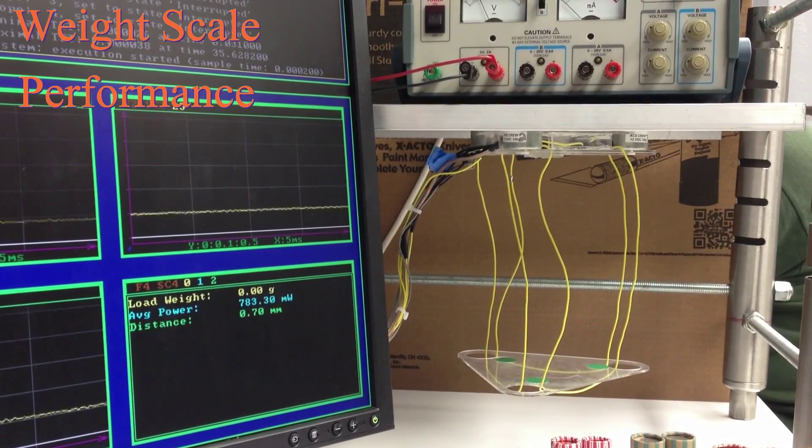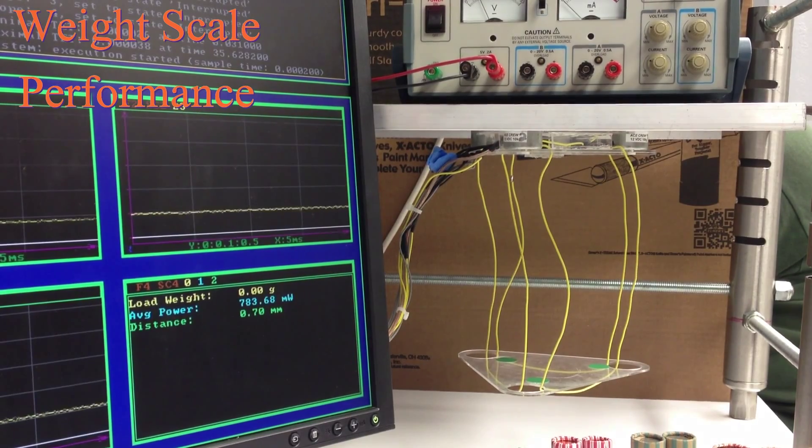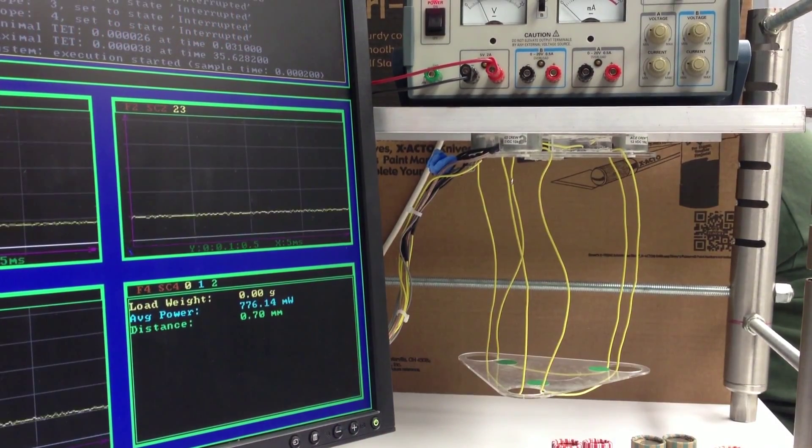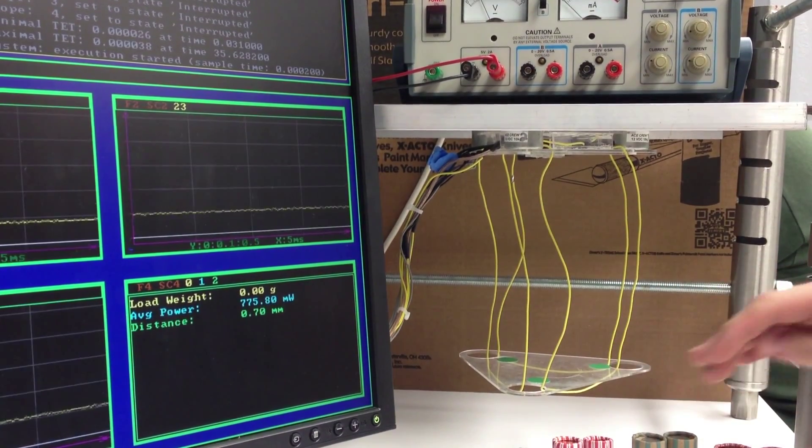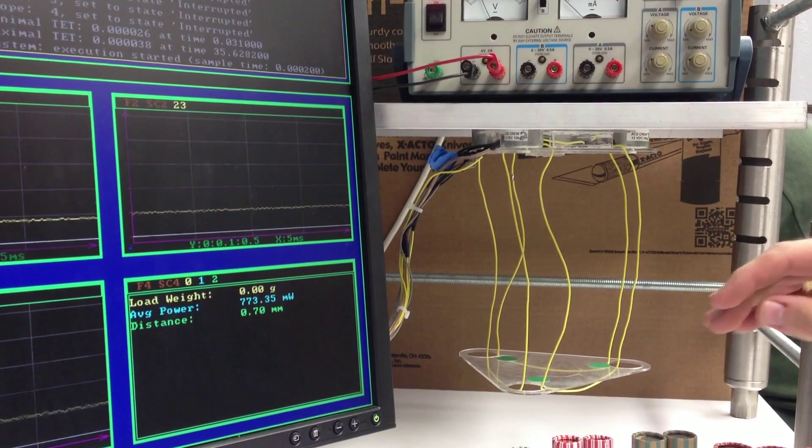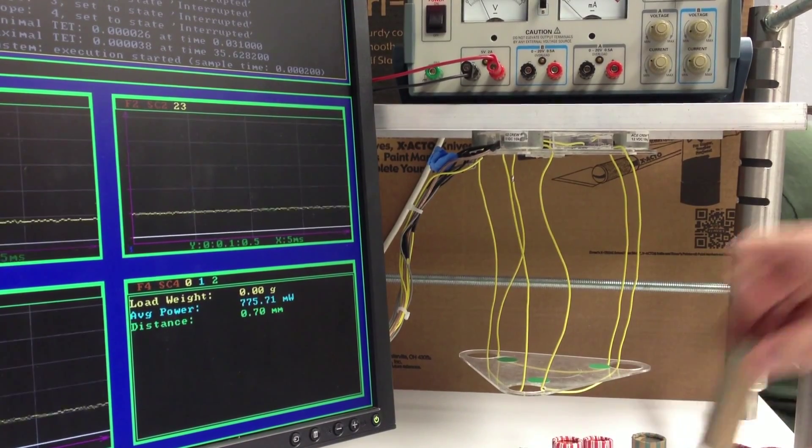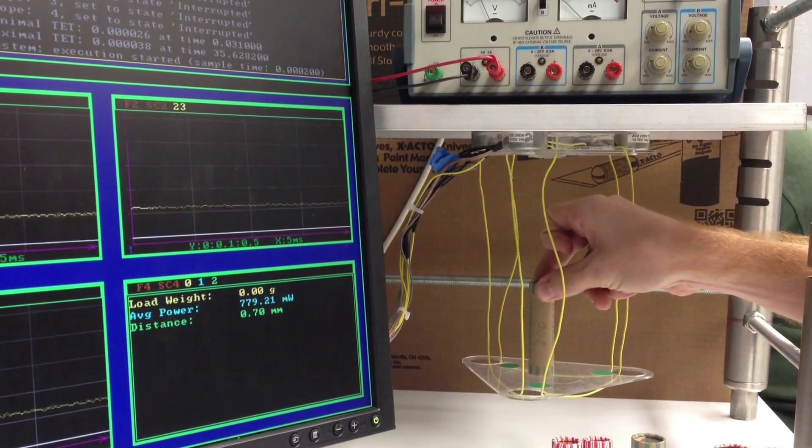In this section, we are going to demonstrate the accuracy of our weight scale on our module. The approximated load weight is displayed on the target monitor. Previously, we showed how much each roll of coins weighs, so let's get started by adding 200 grams.